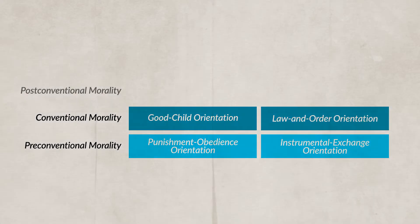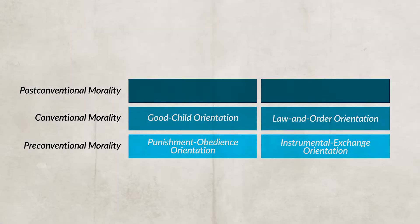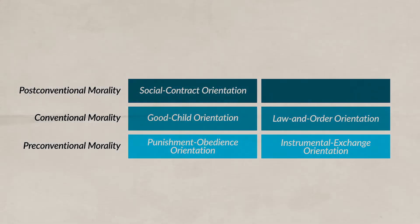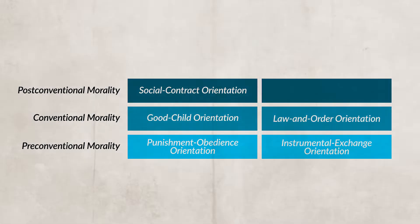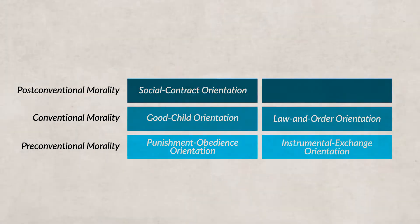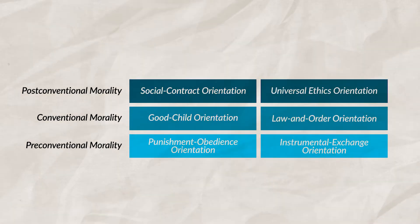The last level is post-conventional morality, which also has two stages. The first is social contract orientation. If you remember from your civics or government class, a social contract is an agreement between members of society. People agree to cooperate for societal benefit. For example, if you live in the United States of America, you agree to follow the laws of the land, and in return, the state offers protection and opportunities. During this stage, moral reasoning is still focused on rules and laws, but there is an acknowledgement that sometimes moral and legal law can differ, and in some situations it might be moral to break the law.